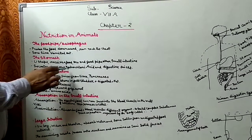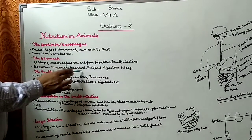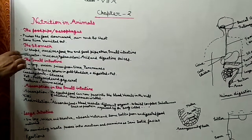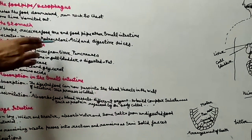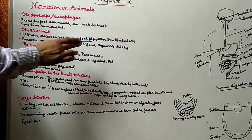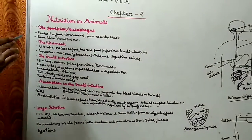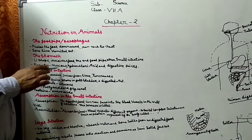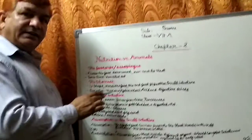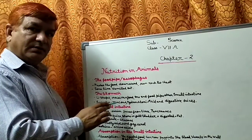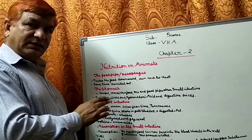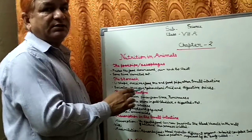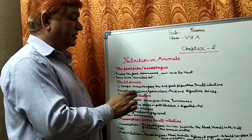The stomach secretes mucus, hydrochloric acid, and digestive juices. Baccho, mucus protects the inner lining of the stomach - jo antriq diwaarein hoti hain, stomach ki unko mucus protect karta hai.